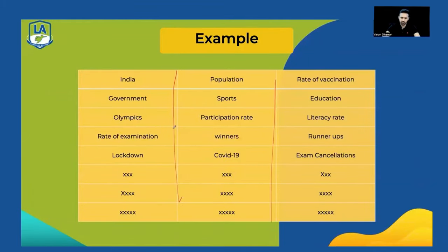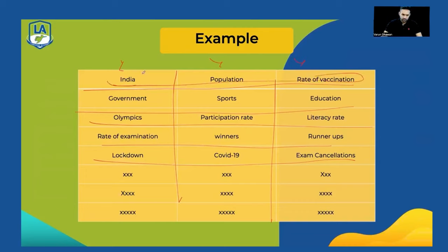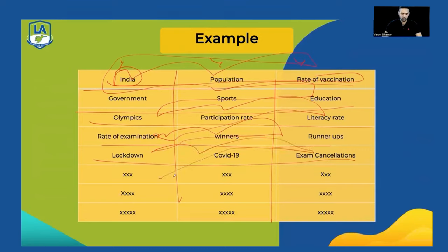Always pay attention and note down your keywords. Divide your notebook like this. Students' common problem is they take notes but write very long keywords — take only one to three word keywords. For example: 'India was the main topic of the lecture. He told about India, population and rate of vaccination. He told about government, sports and education. He told about Olympics, participation rate and literacy rate. He told about rate of examination, winners and runners-up. He told about lockdown, COVID-19, exam cancellation.' When saying 'He told about', speak the keywords like a sentence — it should sound natural.